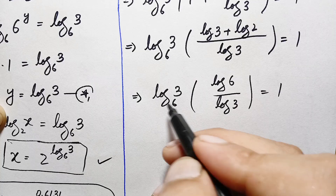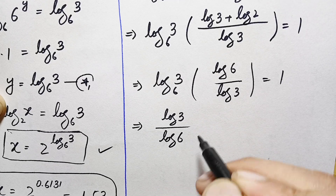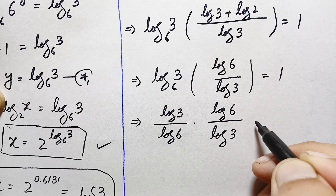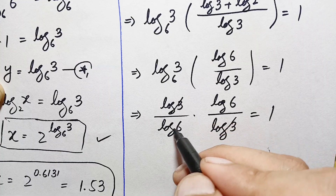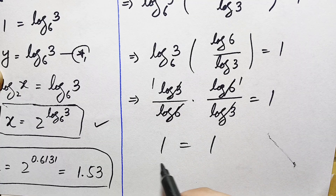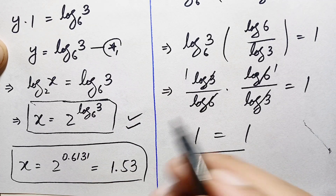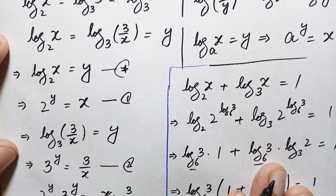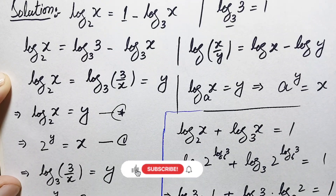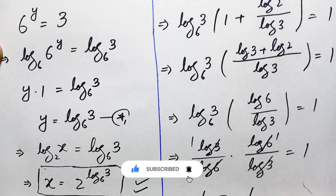This becomes: (log 3 / log 6) times (log 6 / log 3), which equals 1. The log 3 terms cancel and log 6 terms cancel, giving 1 times 1 equals 1. Since both sides equal 1, x equals 2 raised to power log of 3 with base 6 is the exact and correct value of x and the solution of this beautiful logarithm math problem. If you like this video, don't forget to subscribe to my YouTube channel for more interesting step-by-step math solutions. Thanks for watching, take care, bye bye.